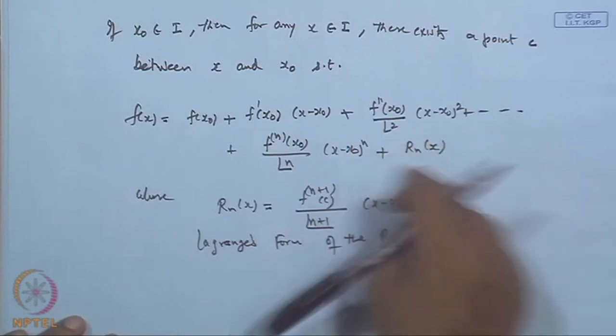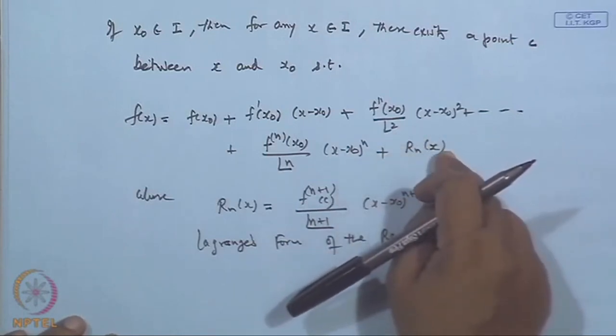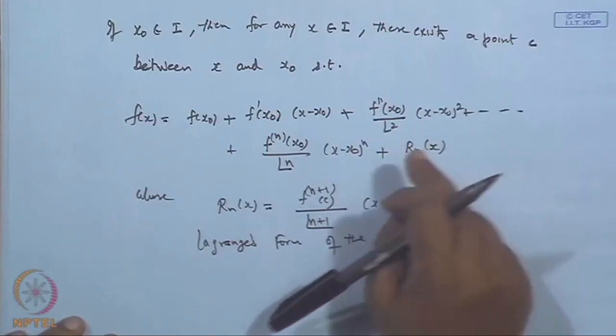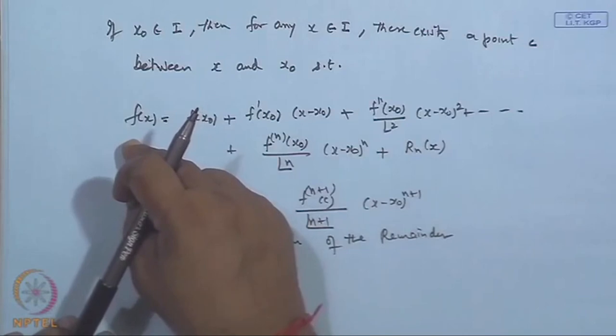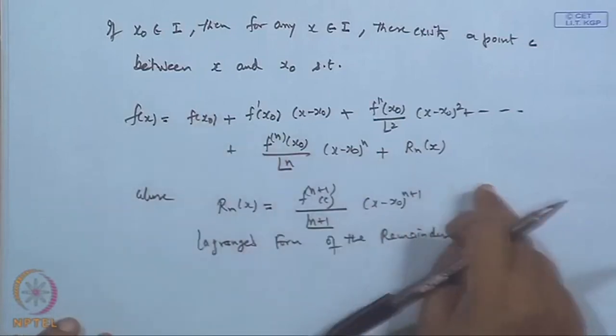This expansion is valid when f is differentiable and continuous up to order n+1 in the neighborhood of x₀. If the remainder R_n → 0, then this same expansion is known as the Taylor series expansion for f(x). We will discuss the proof next time. Thank you very much.